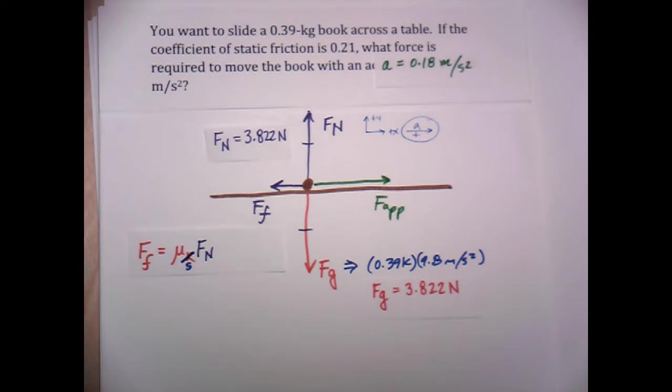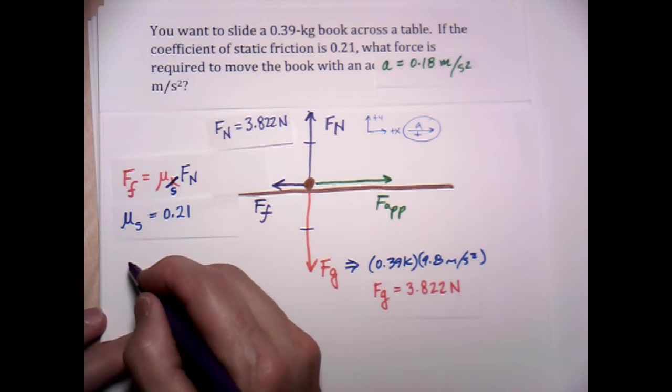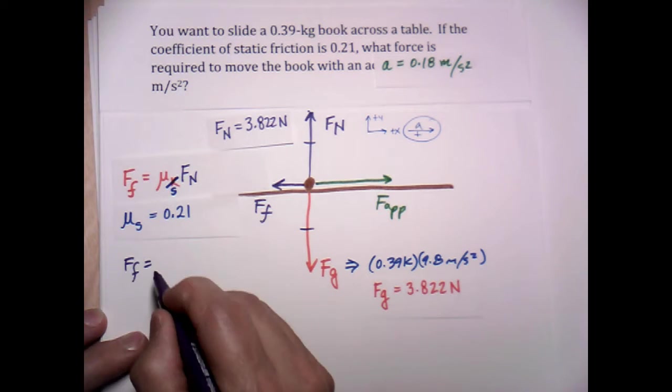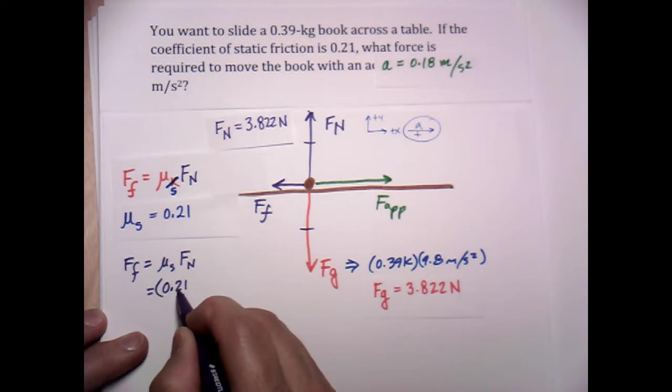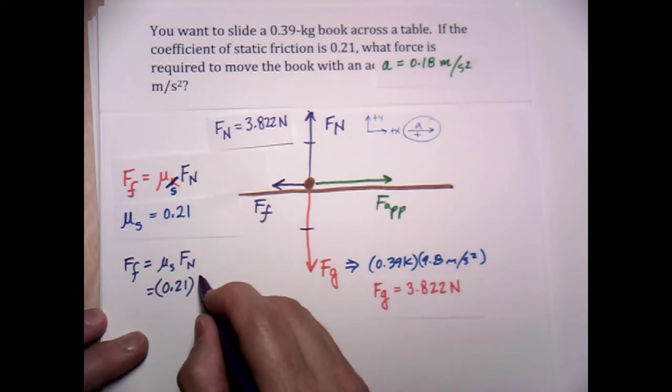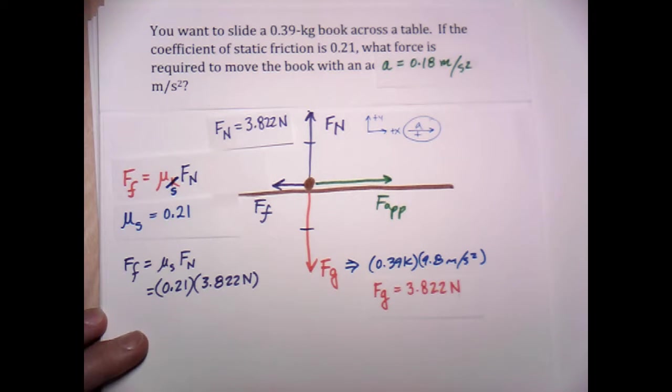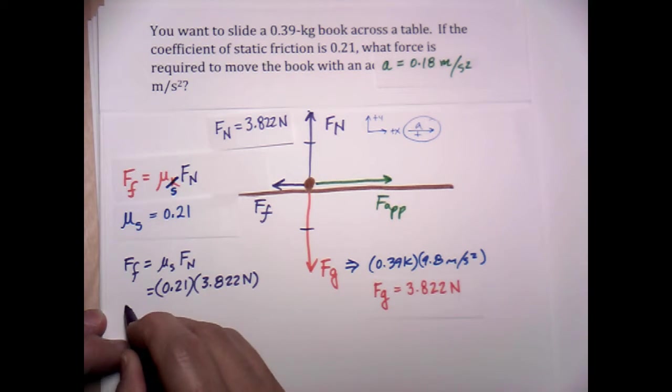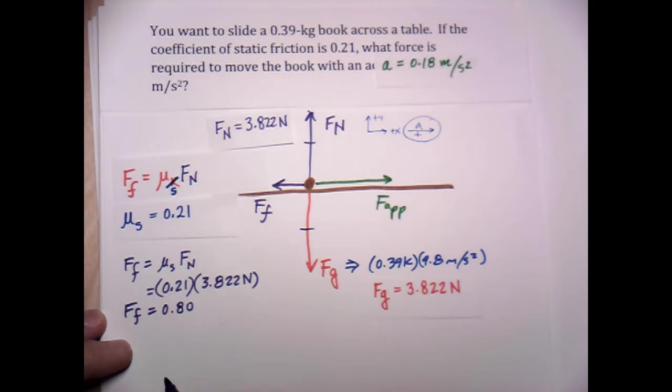So let's go ahead and work this out using that equation. We know that the coefficient of static friction is 0.21. So what we can do is multiply this out. The frictional force is equal to mu sub S times normal force, which is going to be equal to 0.21, no units because it's a ratio, the units cancel, times 3.822 newtons.